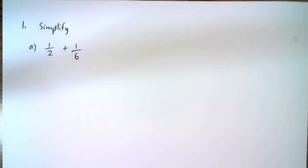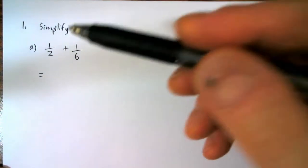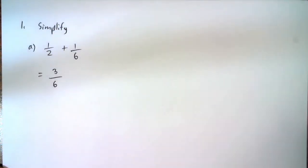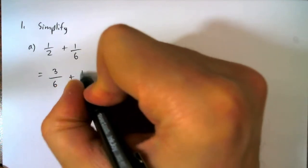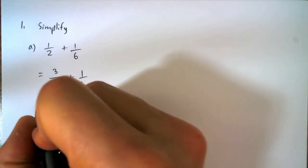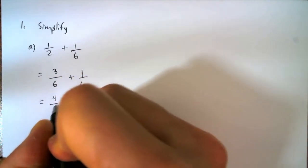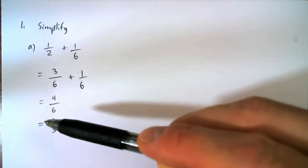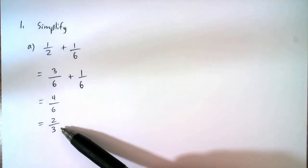To add two fractions they need to have the same denominator, and we can get equivalent fractions by multiplying the numerator and the denominator by the same number. So if I multiply the one by three and the two by three, I will have a fraction that has a denominator of six. I can add the two and reduce my fraction by dividing the numerator by two and the denominator by two to get my answer.